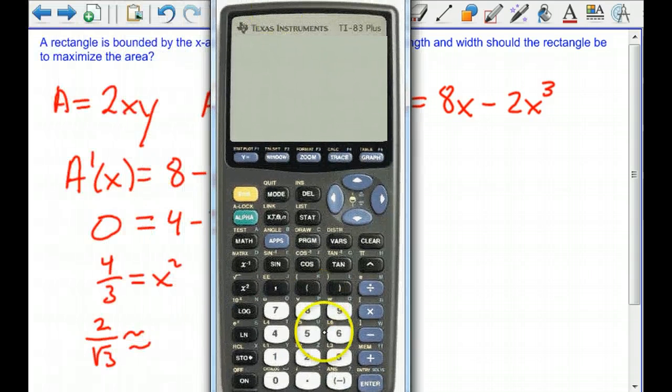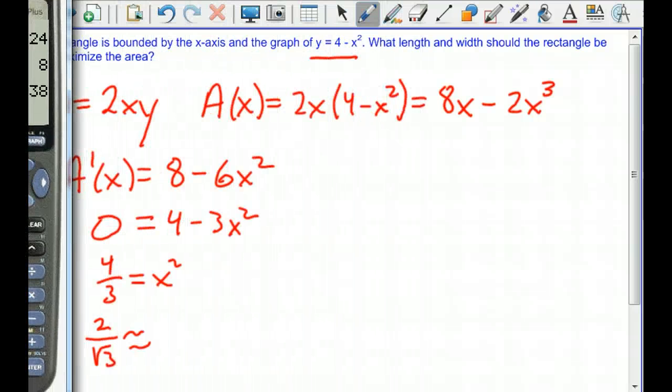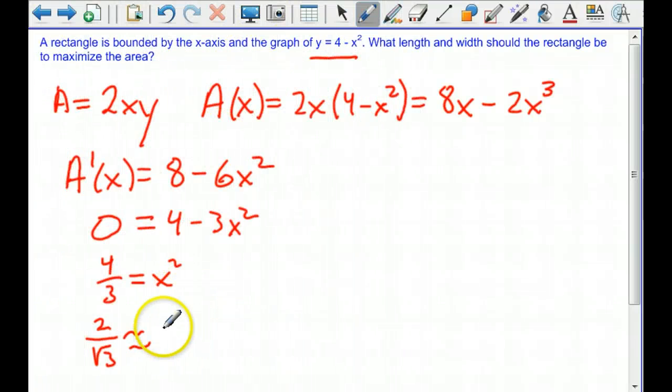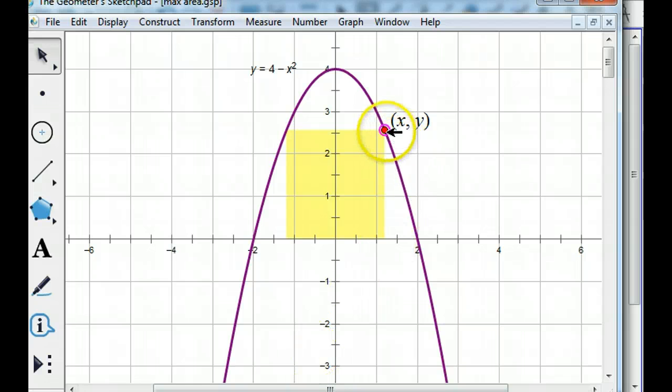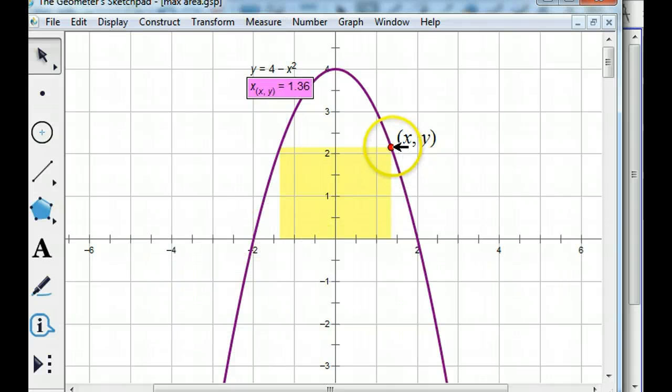Which is approximately... 2 divided by square root of 3, 1.155. So our length is 2 of those x's. If I measure our x-coordinate, bring that up to 1.15, that's supposedly the biggest rectangle we can fit under there.